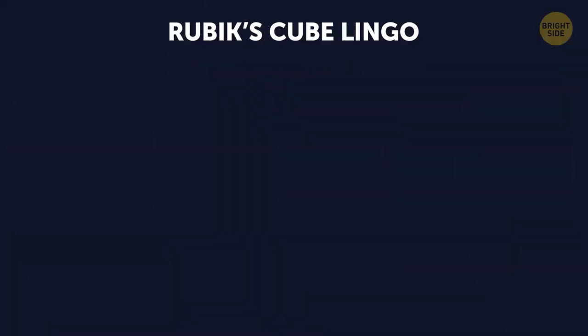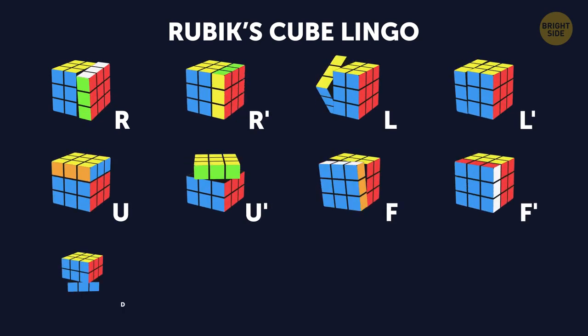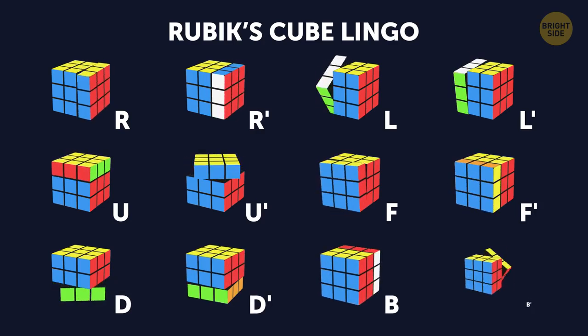To understand how these algorithms work, you have to learn the Rubik's Cube lingo. All moves are written down in letters that stand for one 90-degree cube rotation.